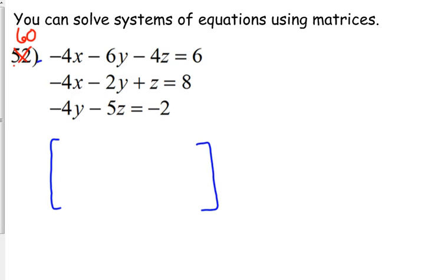Notice we have three equations, we have three variables, and then we have a constant on the end. So that's where the three rows and the four columns come from. And what we're going to put in those rows and columns are the coefficients. So we're going to just take the negative four, the negative six, the negative four, and the positive six.